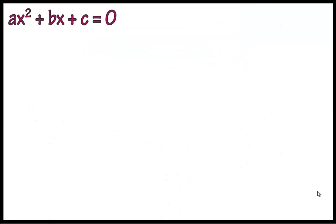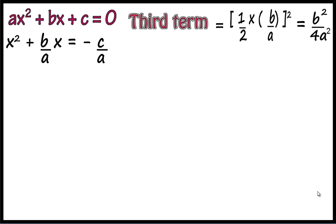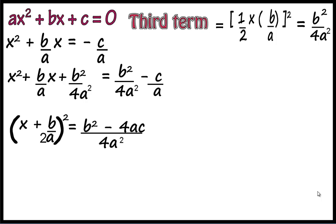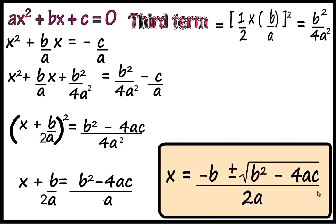Let the equation be ax square plus bx plus c equals 0. Using the completing the square method, we get x square plus b by a times x plus c by a equals 0, then x square plus b by a times x equals minus c by a. The third term equals half into b by a the whole square, which equals b square upon 4a square. Adding this to both sides: x plus b by 2a the whole square equals b square minus 4ac upon 4a square. Therefore x plus b upon 2a equals plus or minus root of b square minus 4ac upon 2a. Therefore x equals minus b plus or minus root of b square minus 4ac upon 2a.